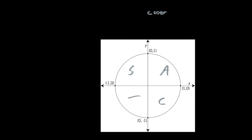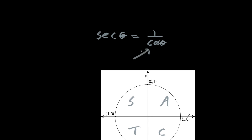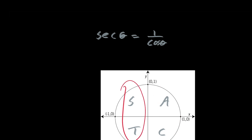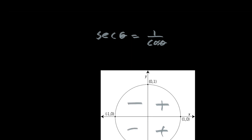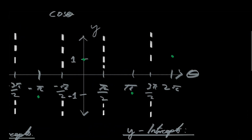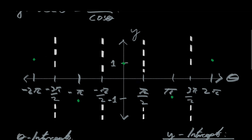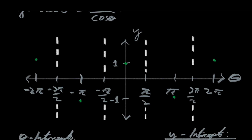Let's make this unit circle earn its money by taking on extra responsibilities as a CAST diagram, which tells us where our basic trigonometric functions are positive and consequently negative. We can make a special one for sec of theta: wherever cosine of theta is negative, sec of theta is going to be negative, and wherever cosine of theta is positive, sec of theta is positive too. So sec of theta is positive in the two quadrants where cosine is positive, and negative in the two quadrants where cosine is negative.